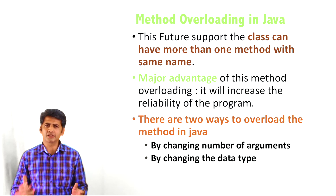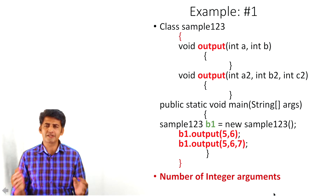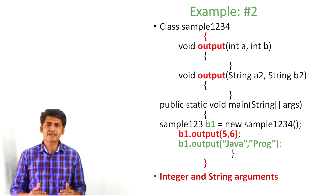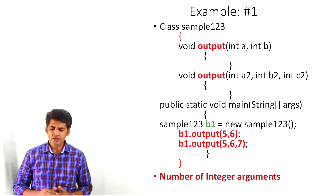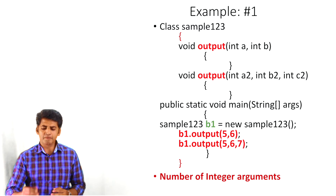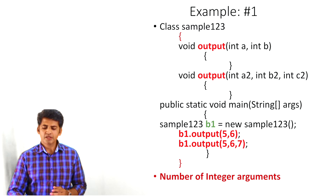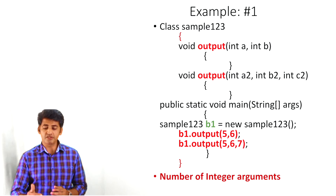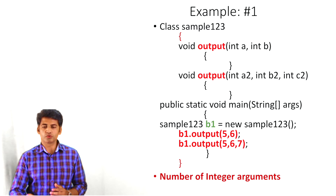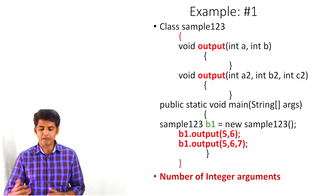We are going to see two different examples: the first is changing the number of arguments, and the second is changing the data type. In the first example, the class name is sample123 with the method name as 'output'. The first method has two parameters, A and B, and the second method has the same name 'output' but three parameters: A2, B2, and C2. So here we are changing the parameters — the first method has two parameters and the second method has three parameters.